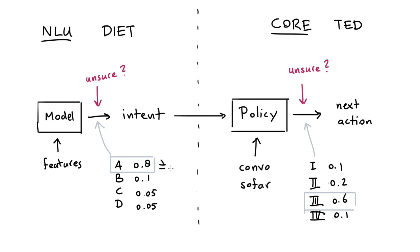If the threshold is 0.7, then we could say: here, the intent is predicted with confidence 0.8 — that's fine. But in a case where it's less than 0.7, we might be able to trigger a fallback scenario.